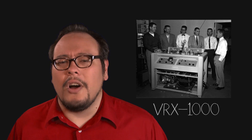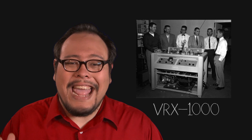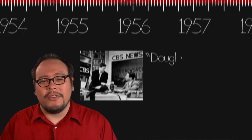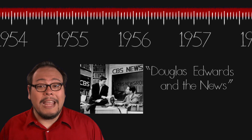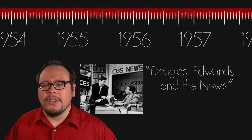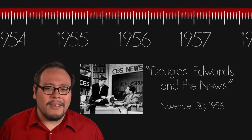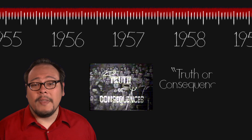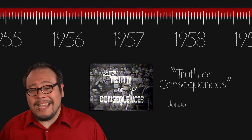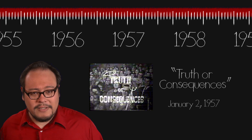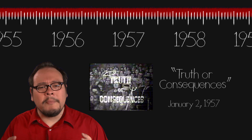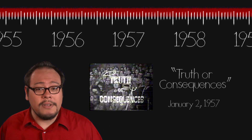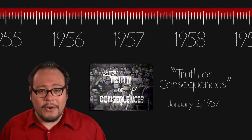Sales were so strong that they had to take orders on napkins. CBS was the first to put it to use in a West Coast delay broadcast of Douglas Edwards and the News on November 30, 1956. On January 22, 1957, the NBC game show Truth or Consequences, produced in Hollywood, became the first television program to be broadcast in all time zones from a pre-recorded tape.